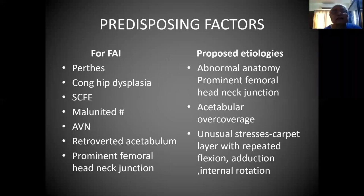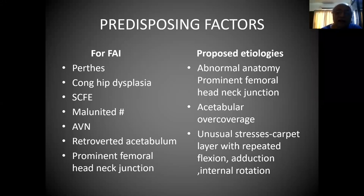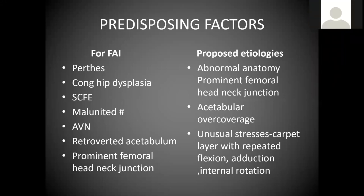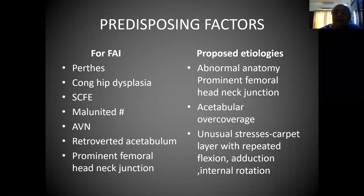What are the predisposing factors for FAI? Perthes disease, because there is an abnormal configuration of the femoral head which repeatedly triggers trauma. Congenital dysplasia is a very common entity. Slipped capital epiphysis can produce FAI, malunited fracture where abnormal configuration takes place, avascular necrosis with abduction hinge phenomenon, retroverted acetabulum, and prominent head-neck junction. Proposed etiologies include abnormal anatomy of the prominent head-neck junction, over-coverage like protrusion, and unusual stress — the cartilage layer with repeated flexion, adduction, and internal rotation gets damaged.